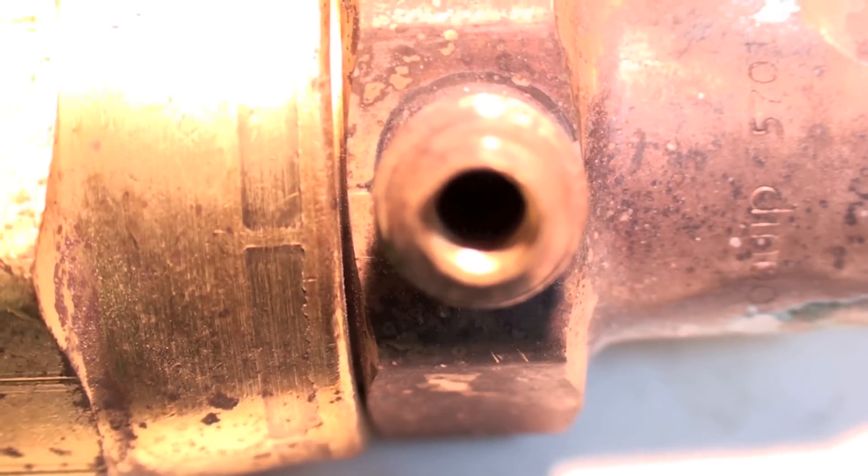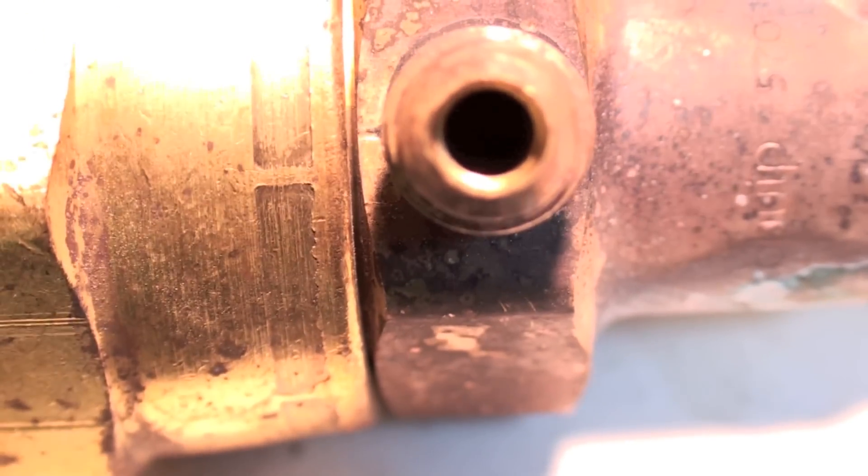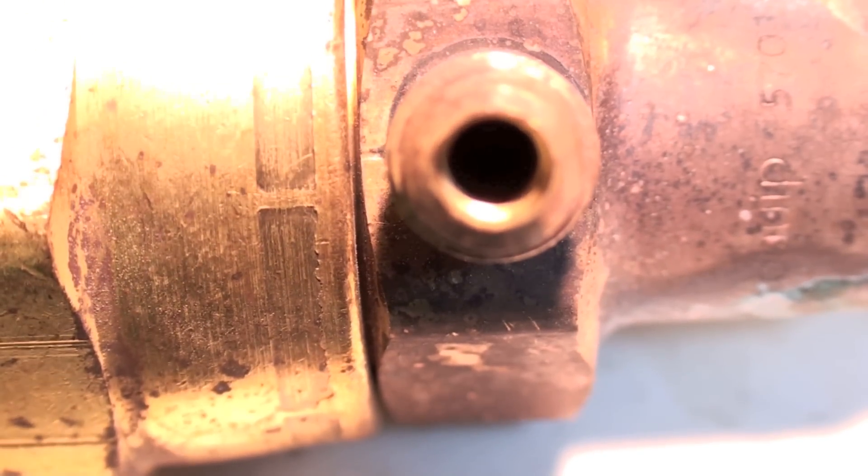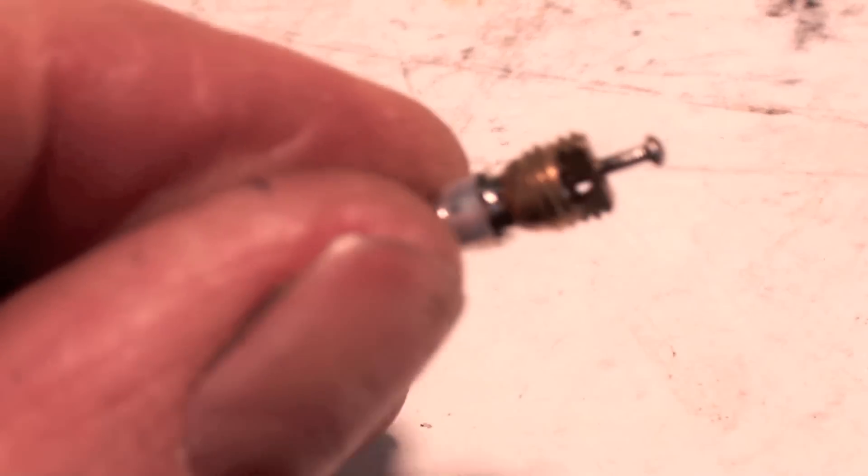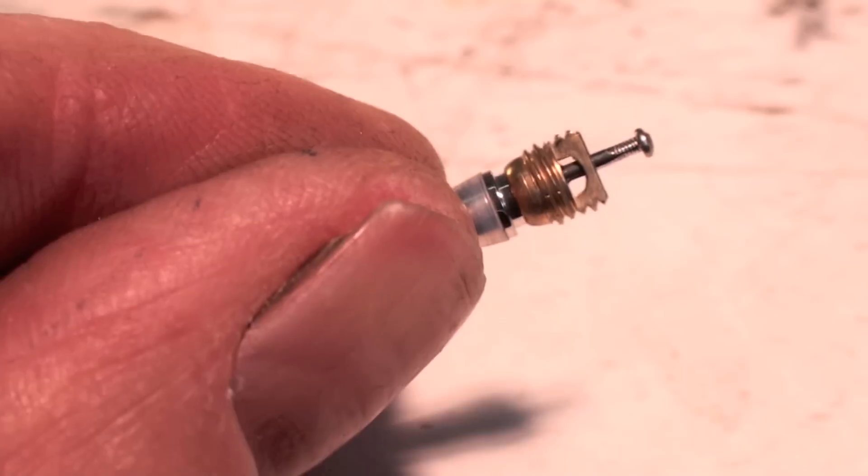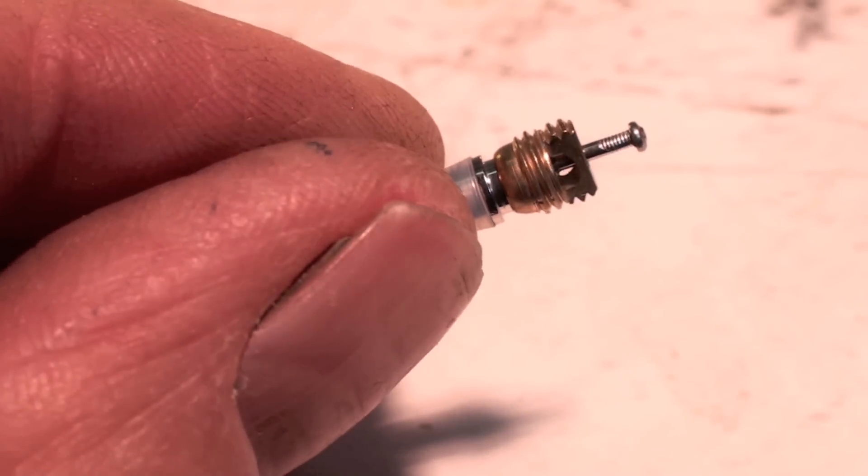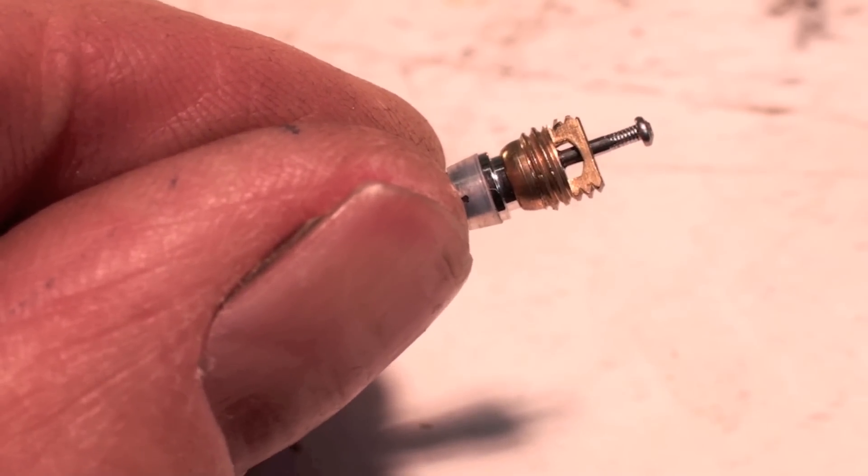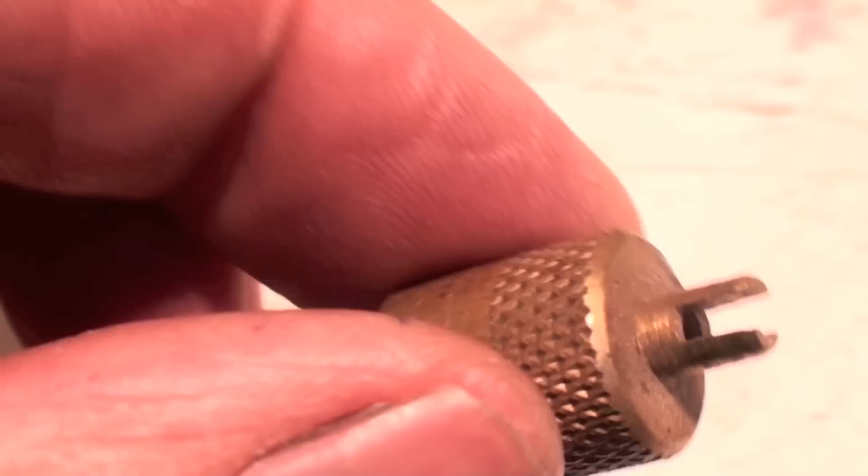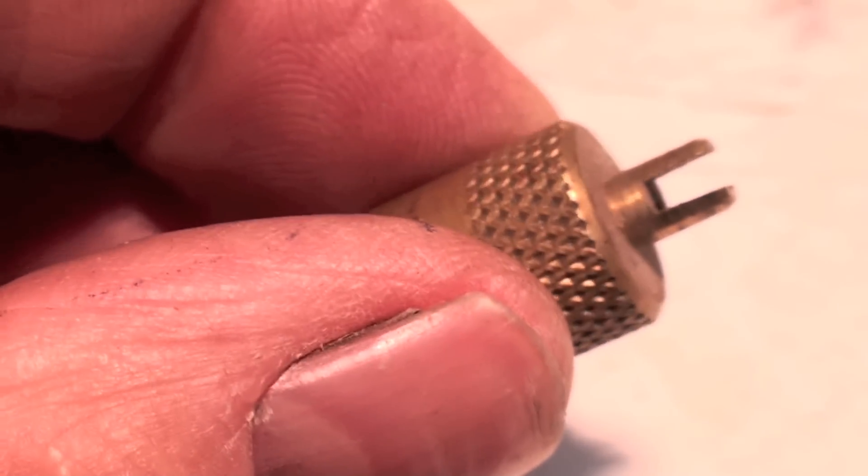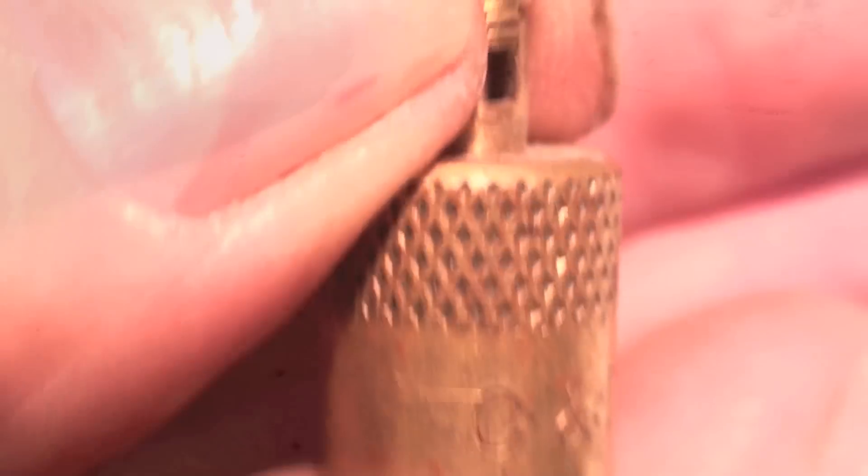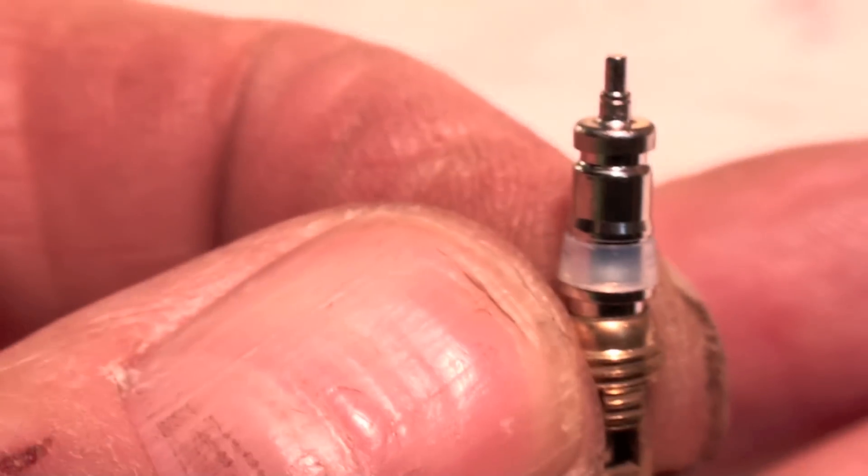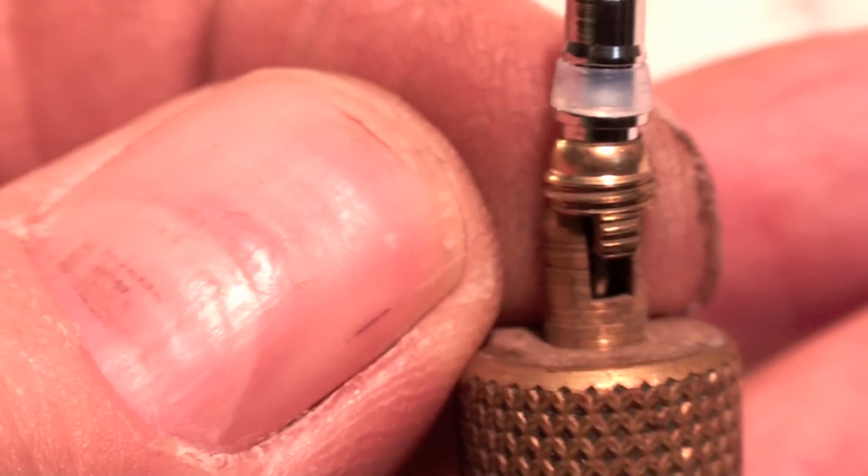Here the Schrader goes into this port here and the port itself is a machined port to fit that gasket. There's threads on it and the corresponding threads are these threads right here on the Schrader. And this here is a Schrader removing tool and it kind of fits on there like that.